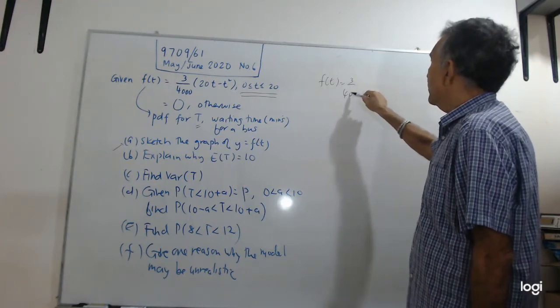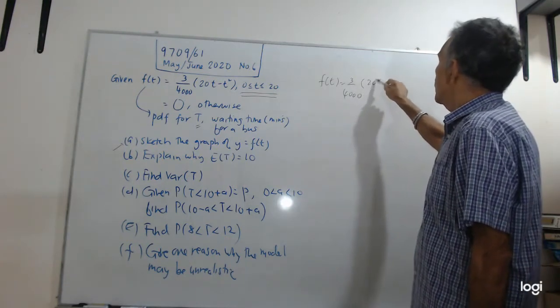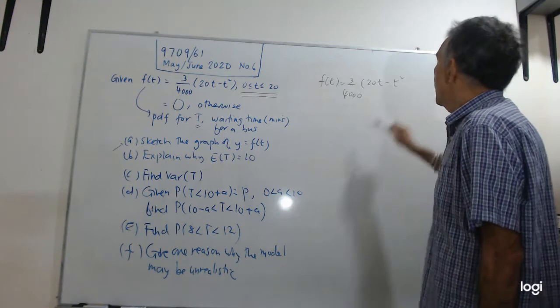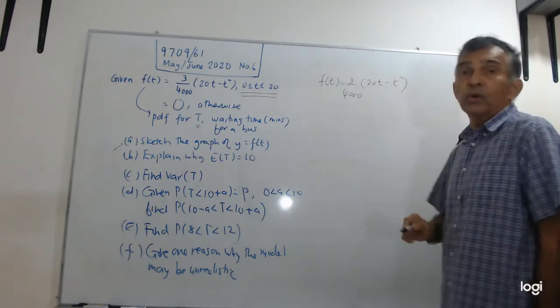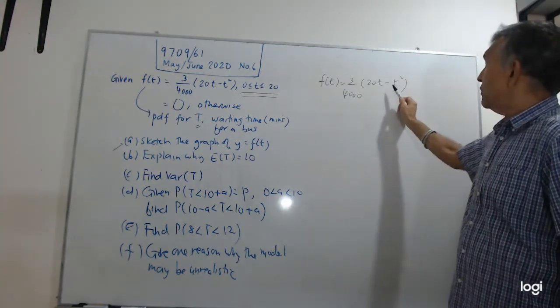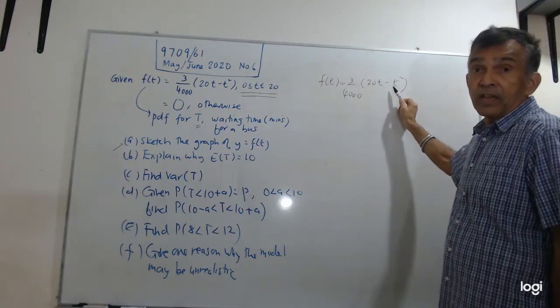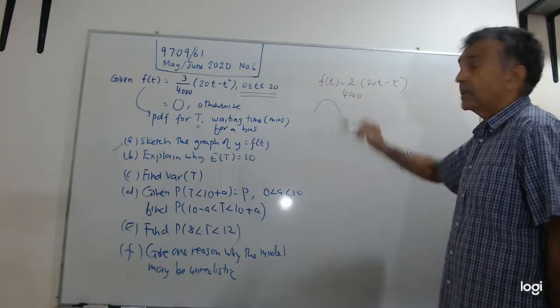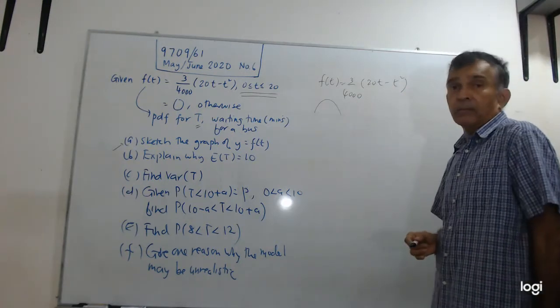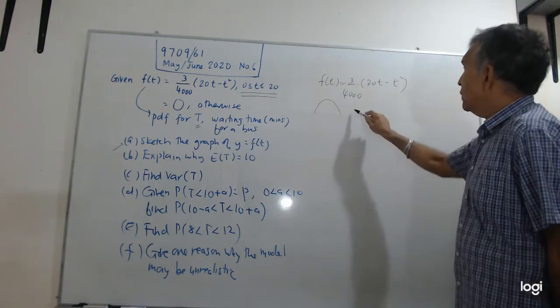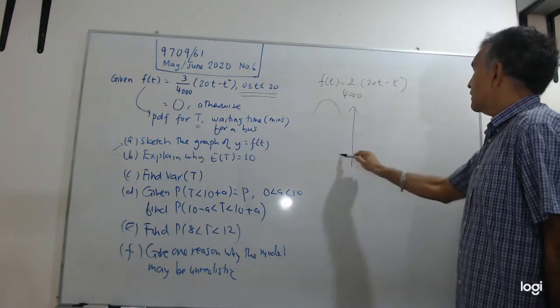What's the question? They ask you in part A to sketch the graph of Y equals f(T). One look at the question, you know it is a quadratic function. 3 over 4000, 20T minus T squared. One look at this, you know it is a quadratic function. And you look at the coefficient of T squared, it is negative. So you know it is going to be something like this, a quadratic curve with a maximum point. So let's sketch it.